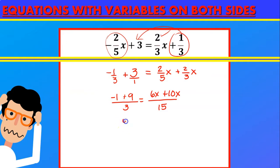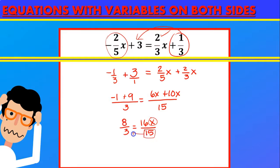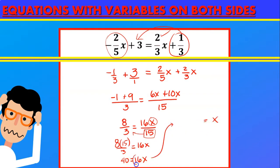So minus 1 plus 9 gives plus 8 over 3, and that equals 16x over 15. Now we want to isolate x. The 15 is dividing, so we move it to the left side where it becomes multiplying: 8 times 15 over 3 equals 16x, which gives 40 equals 16x. We don't want 16x — we want x alone — so 16 passes to the right side dividing: 40 divided by 16 gives 2.5, or 5 halves, and that is your answer.